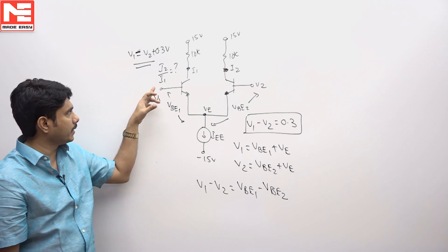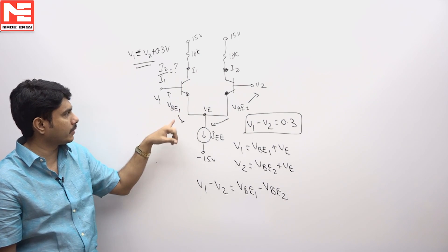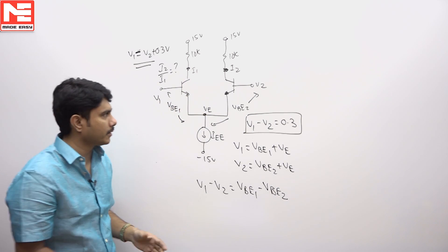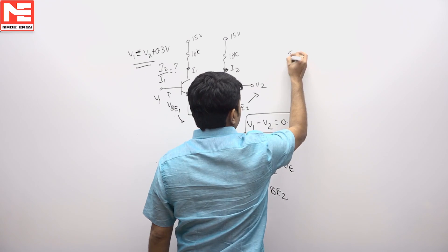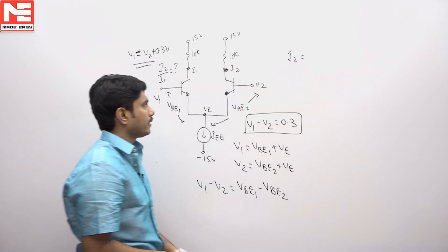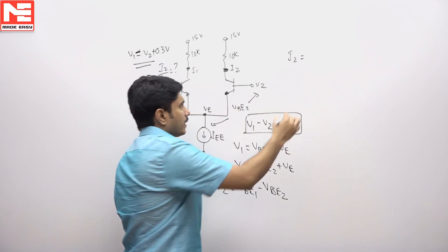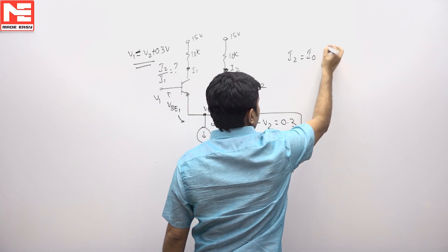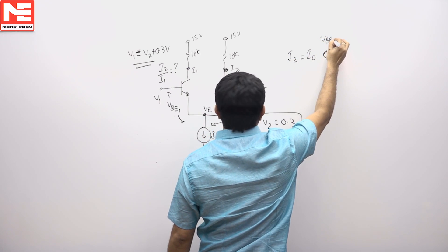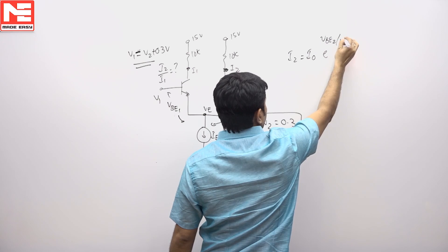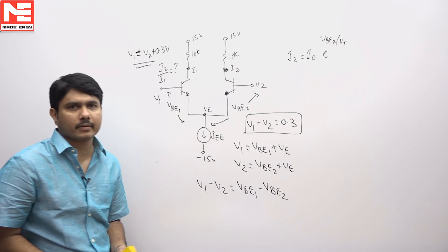Now what is I2 by I1? This is one diode current equation that can be represented as I2 is equal to, second current if you want equation, it is I0 into E power VBE2 divided by VT, this is your second diode current equation.